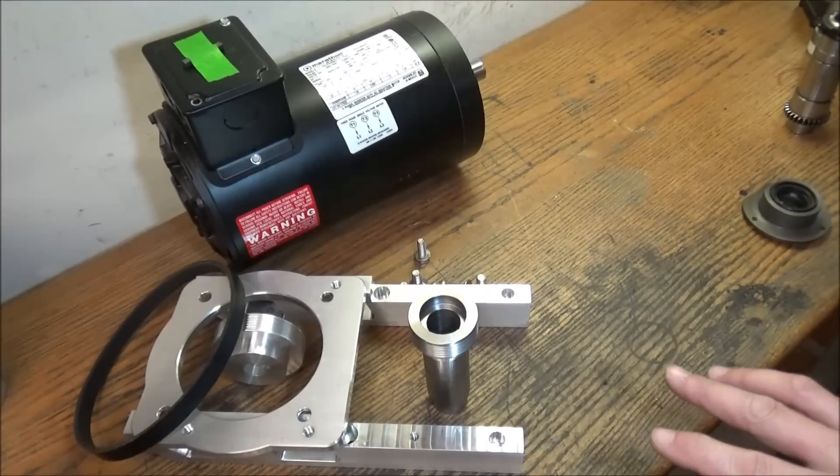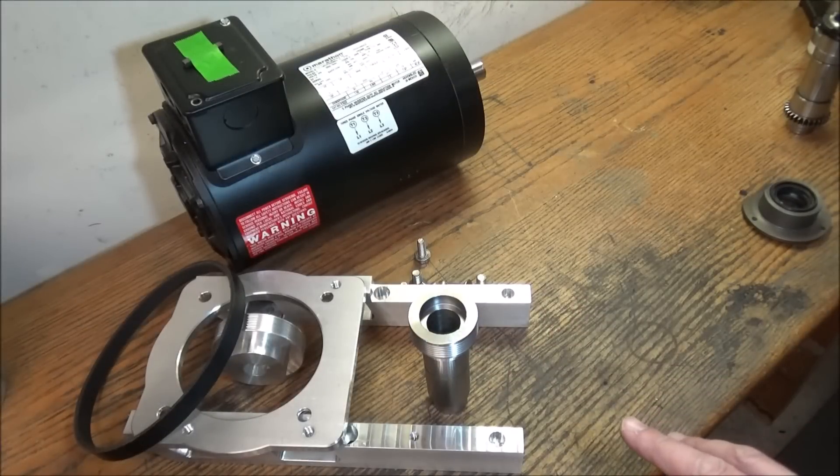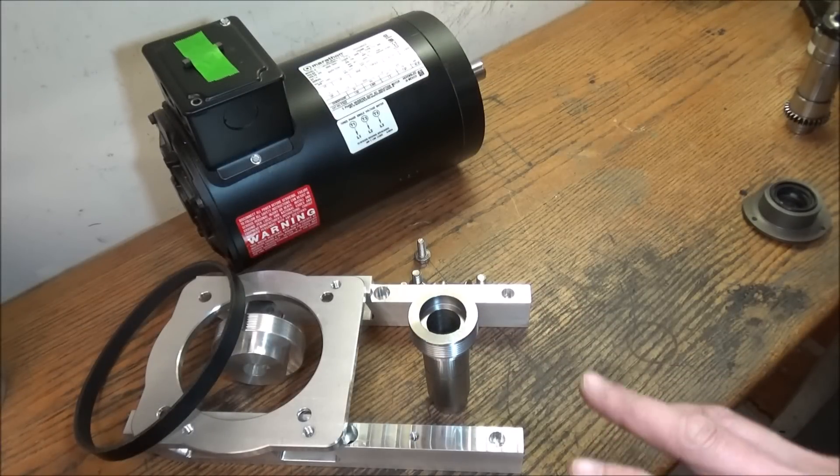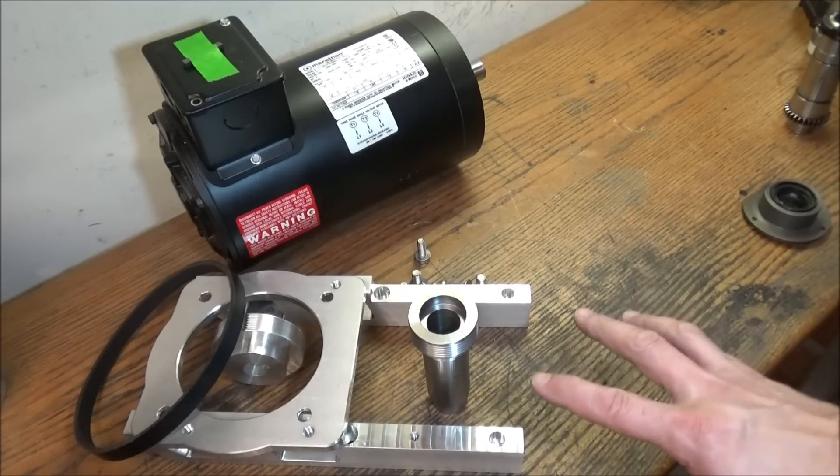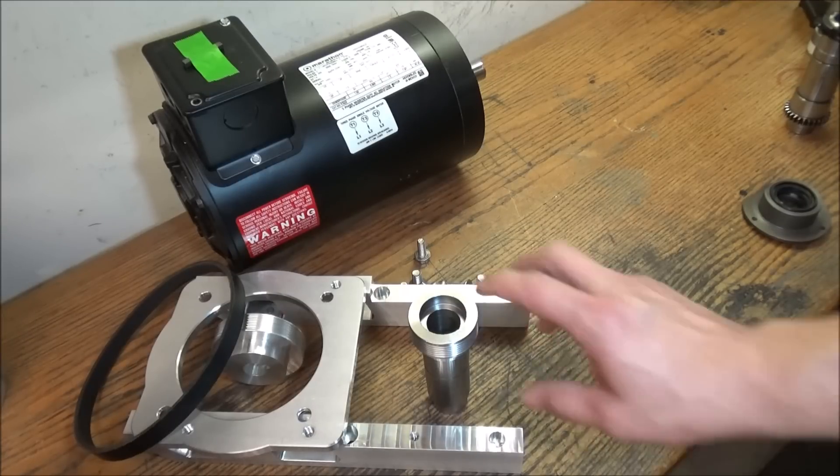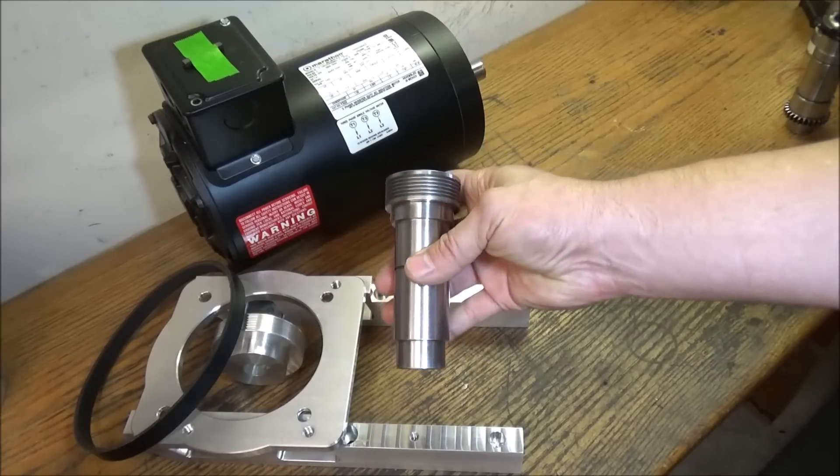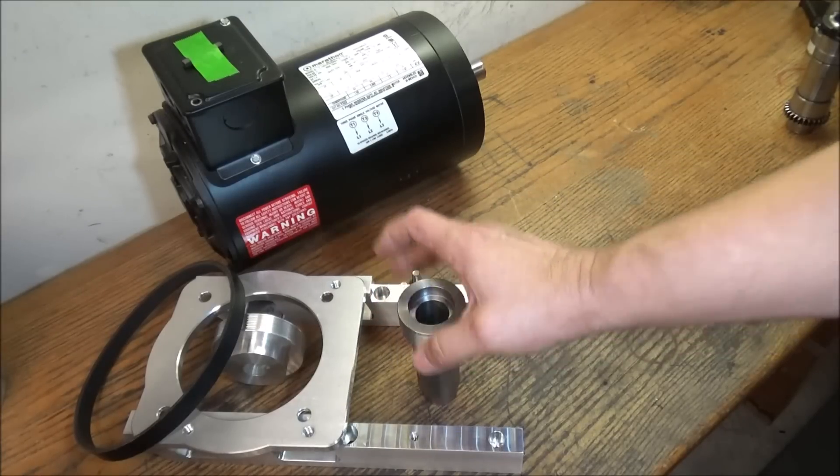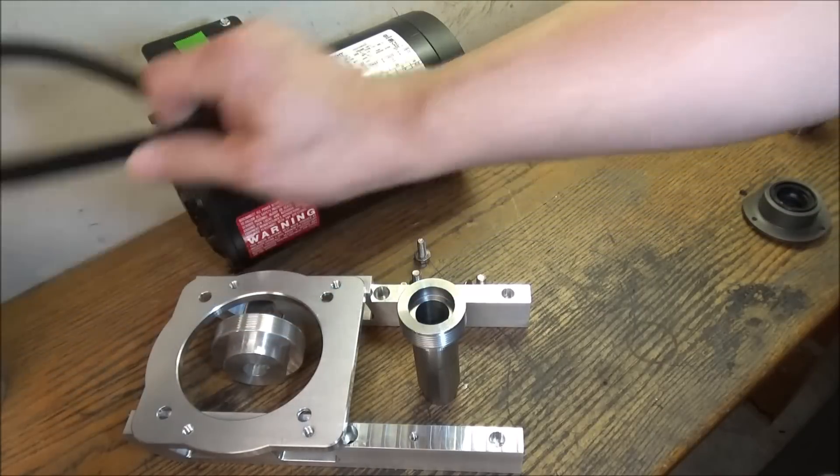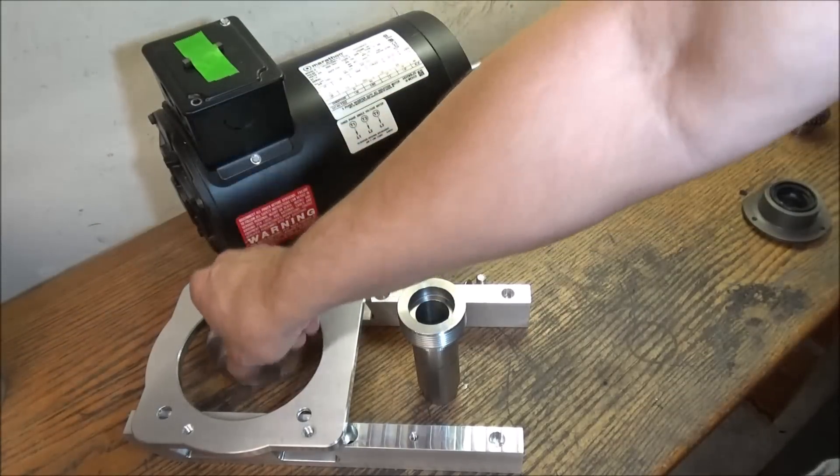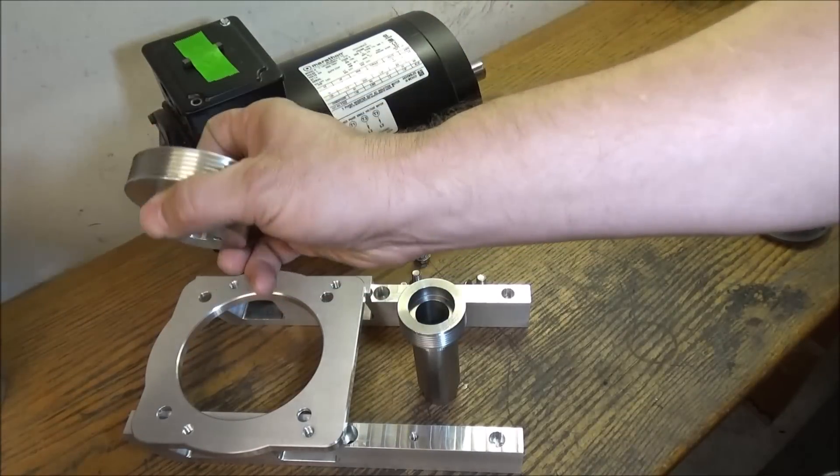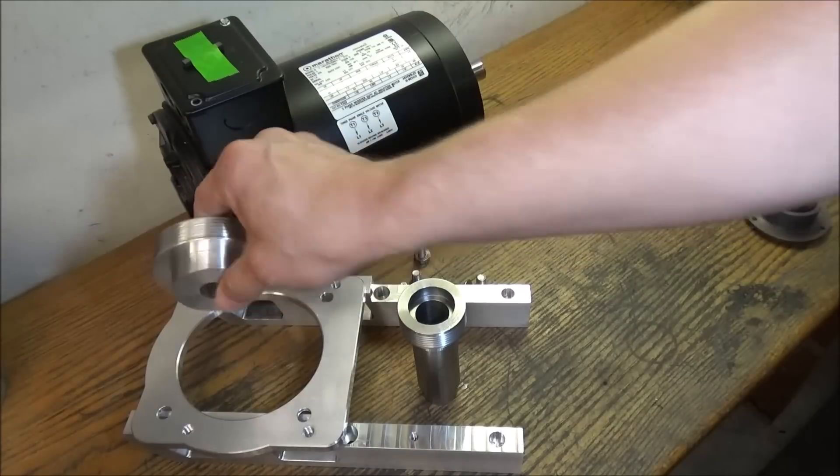So I thought I would post this video and see what kind of interest I have in a belt drive kit. Now this kit will include the steel, all steel quill. An all steel pulley. This one happens to be aluminum but in the kit they'll be all steel.